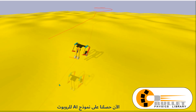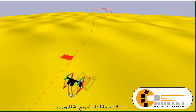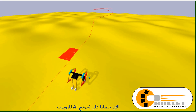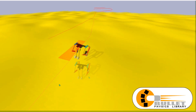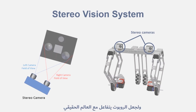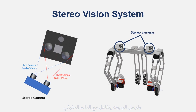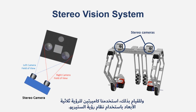Now we obtain the robot AI model. To make the robot react with the real world, the robot must be able to see. To do that, we use two cameras for 3D vision using a stereo vision system.